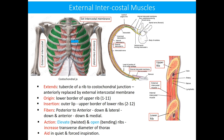These muscles elevate and open the ribs, hence increasing the transverse diameter of the thorax. They therefore aid in both quiet and forced respiration.